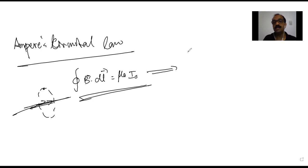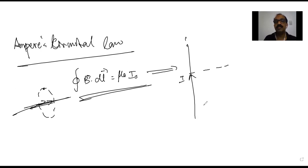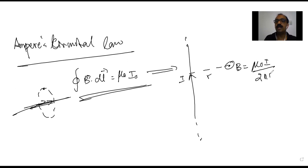The first case is the magnetic field due to an infinitely long wire carrying current. The magnetic field at a point at distance r from the wire is given by B = μ₀I / 2πr.